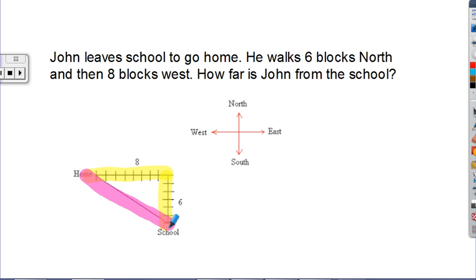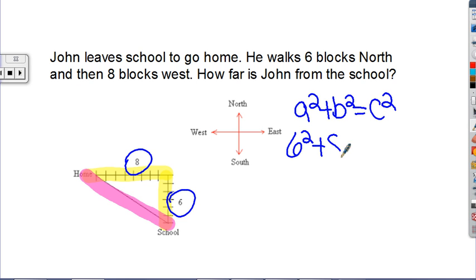We want to know his distance from the school. Again, we'll use the Pythagorean theorem: a squared plus b squared equals c squared. In this case, we have the two short sides, 6 and 8. 6 squared plus 8 squared is going to give us that c squared, or the distance from the school.